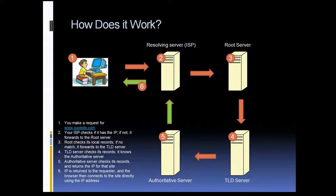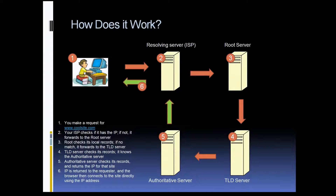The operating system will reply with, 'I don't know what the IP is, so let me send this on out.' It's going to go first to your resolving server, which for most of us is going to be our local ISP. The ISP server is going to check its local cache, and it won't have the IP for that site, so the request will get sent up to the root servers.